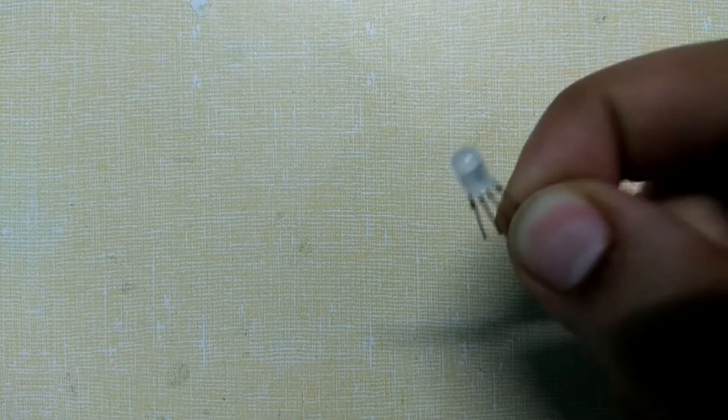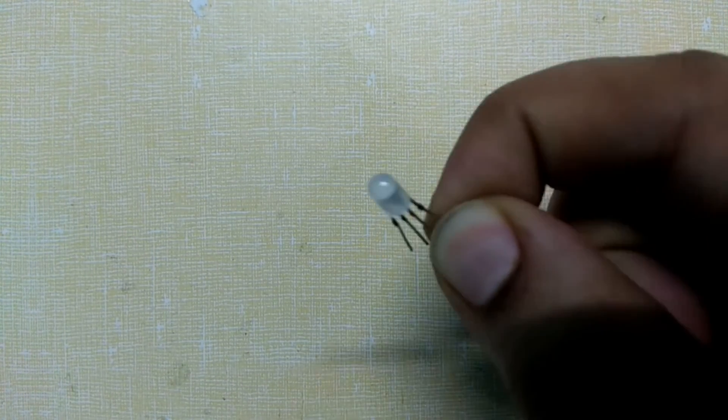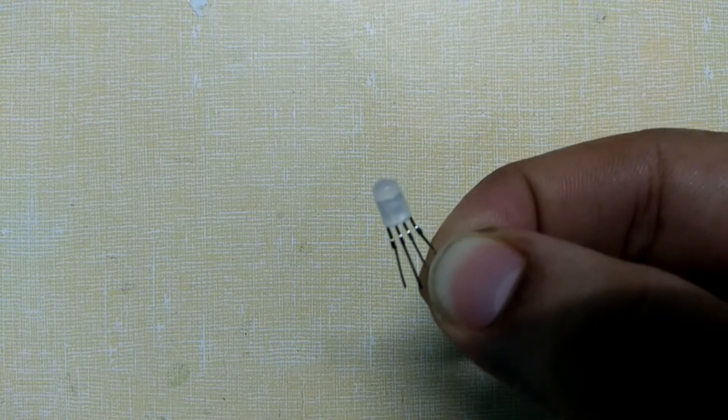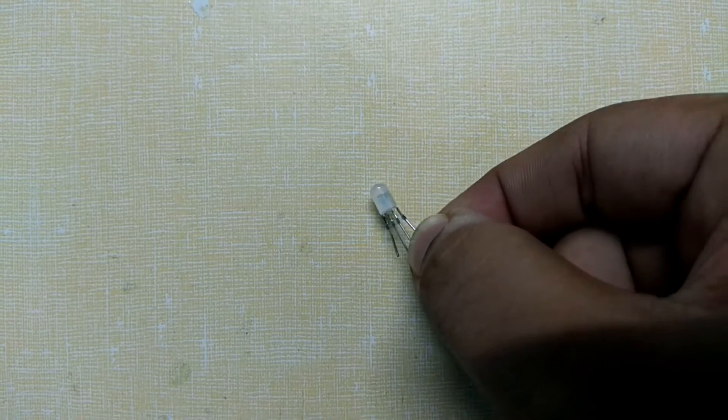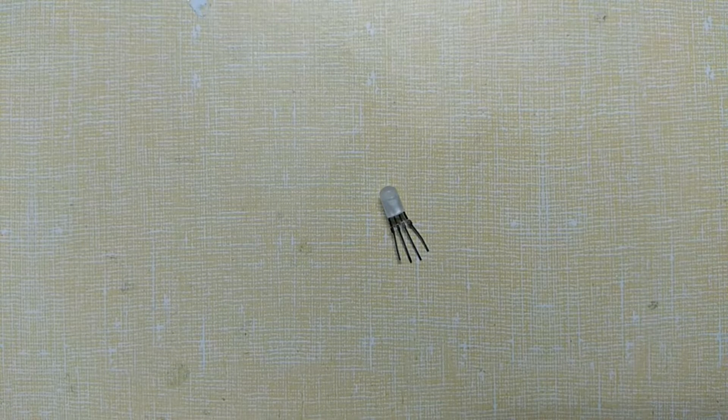This is the RGB LED. It is basically three LEDs combined together in a single package. The one which I am holding is a 5mm RGB LED. Sizes of LEDs differ with different voltages.